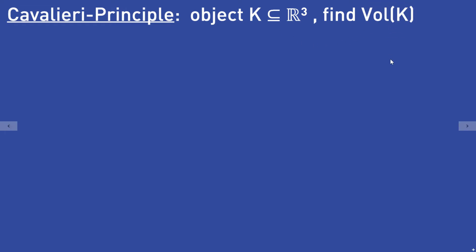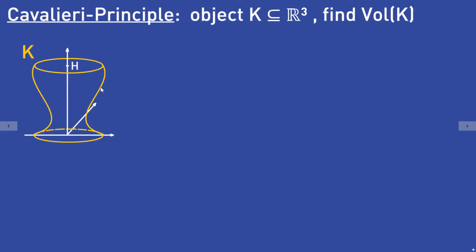The object K could look like that. Now you have to do the following. Let's assume you have an imaginary sword or knife and you cut through or slice the three-dimensional object K horizontally at some height z. The result could look like that, so you cut right through the object horizontally. What you get is the following green cut surface or cross section at height z.